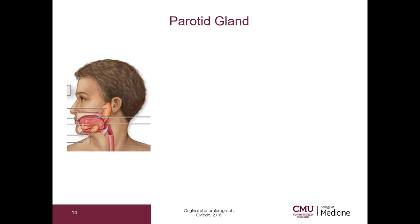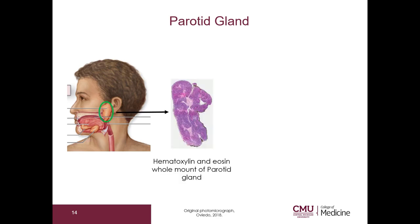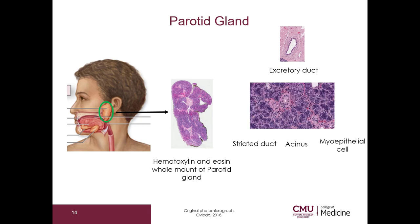This is a review of the parotid gland. Here is our histology — you can see there are excretory ducts. In addition, you should be able to find striated ducts, an acinus, and a myoepithelial cell. Please note the parotid gland is reviewed in a separate video.